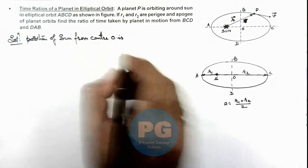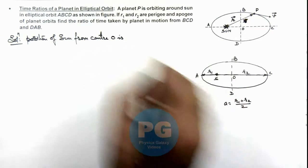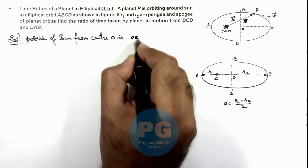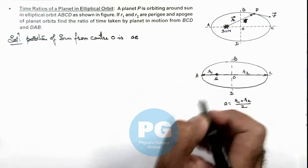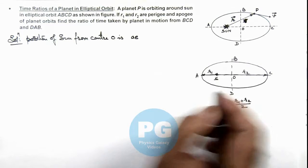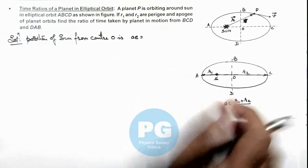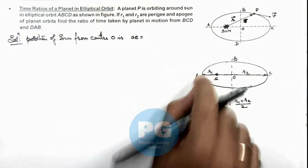The position of sun, the distance of sun from O, can be written as ae, where a is the semi-major axis and e is the eccentricity of ellipse. Then this can be written as the total major axis minus r1.